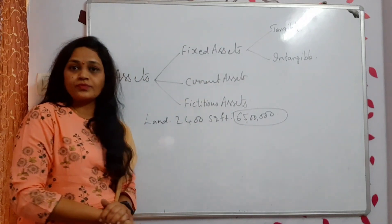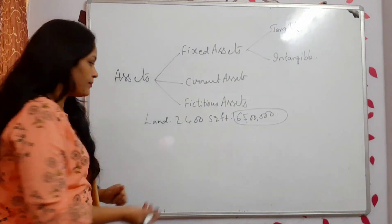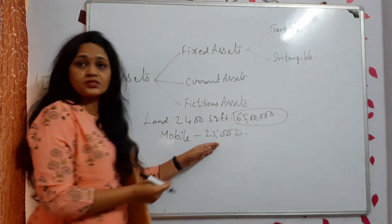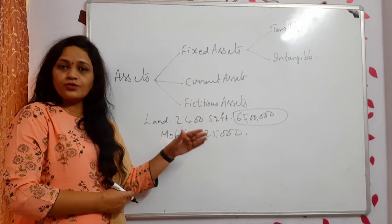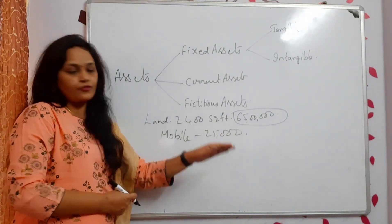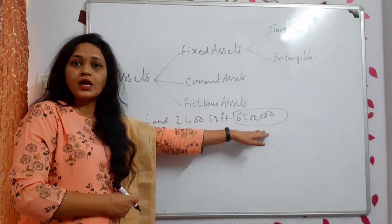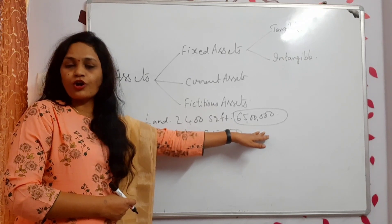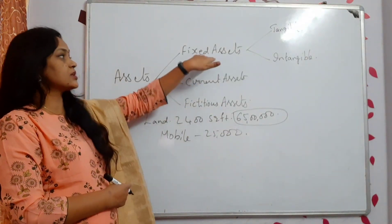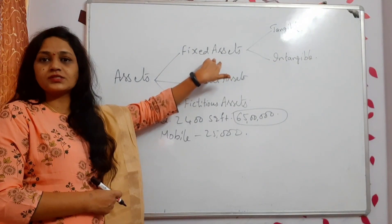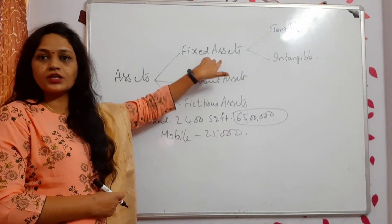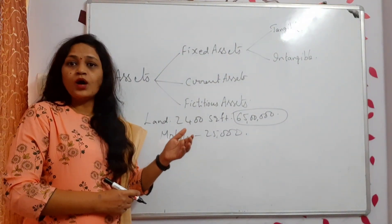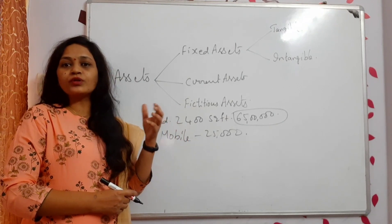Selling that land will take very long time since the amount is very huge. But if I want to sell my mobile which cost 25,000, I put it on OLX and within a week I can sell it. So assets which cannot be converted into cash immediately are called fixed assets. You enjoy those benefits for more than a year.